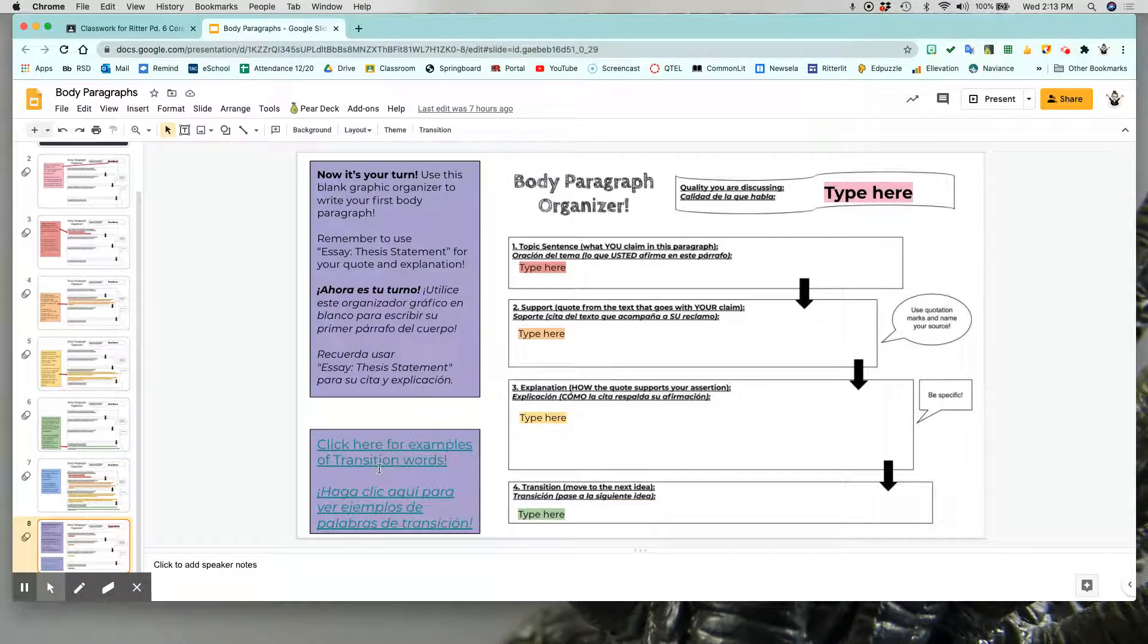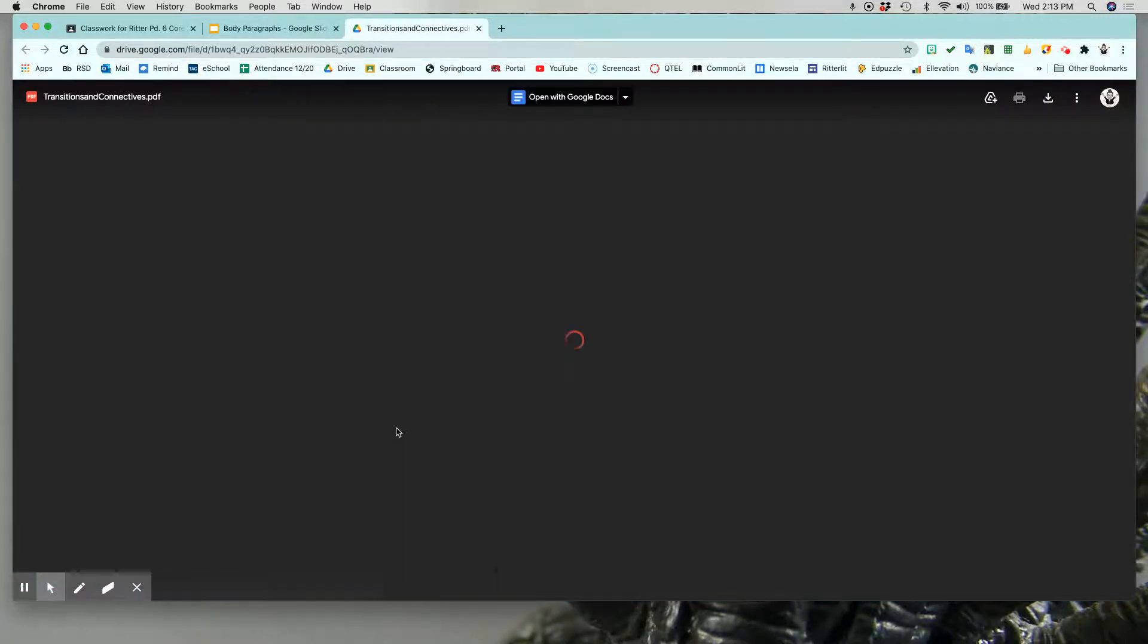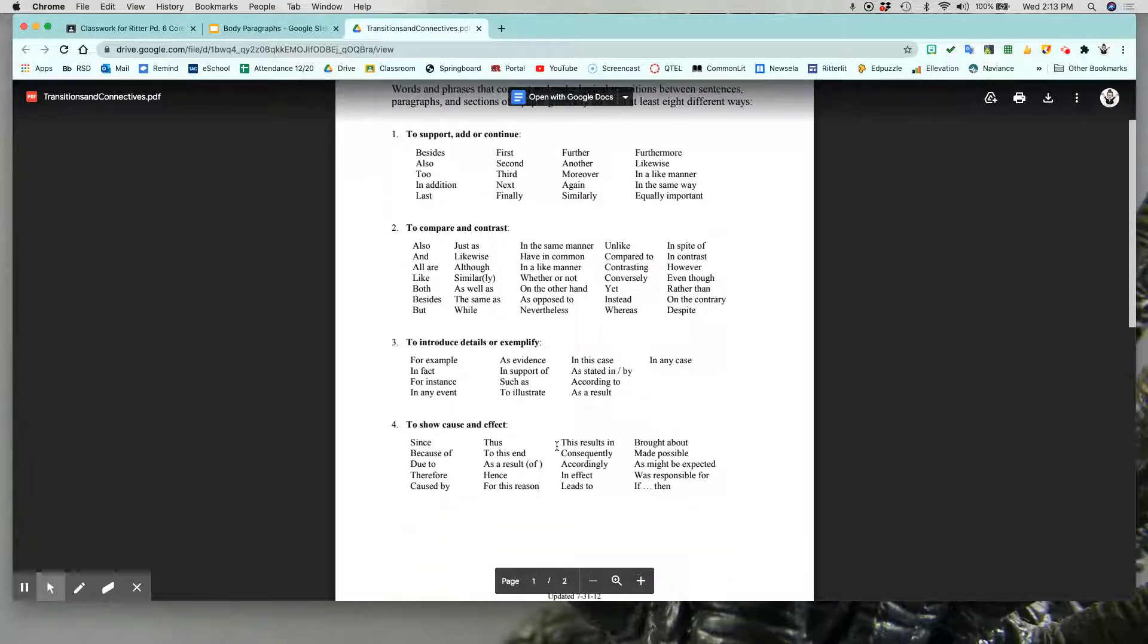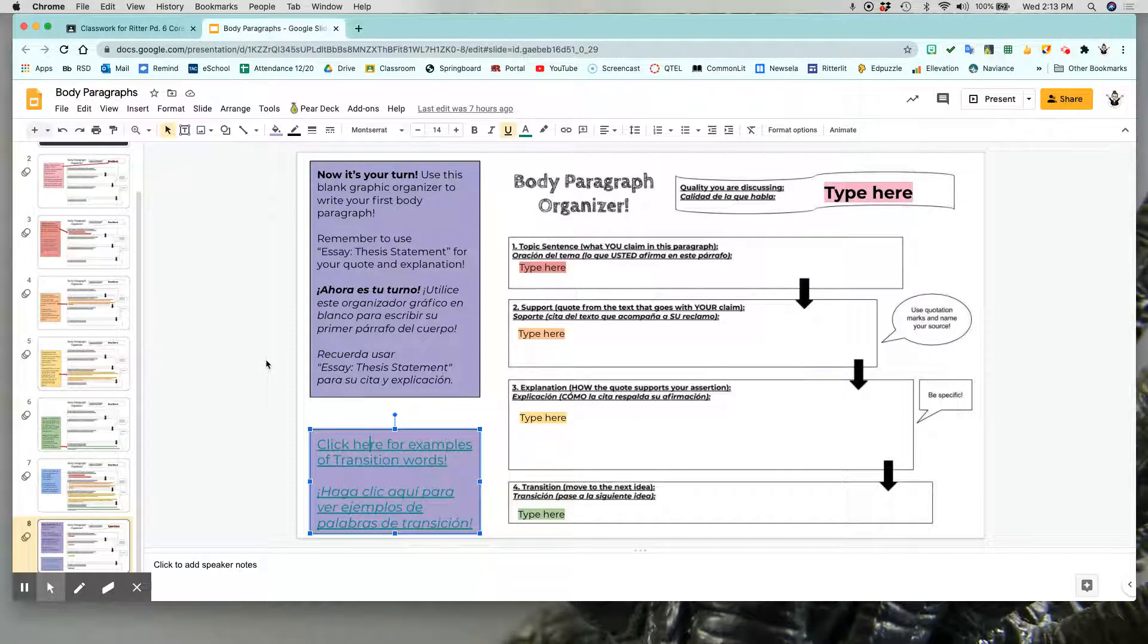If you want to try some other things, then click on this link and take a look at the PDF. It gives you all sorts of words that you can use. And once you have this filled in, you will submit it to me on classroom and you have finished your first body paragraph.